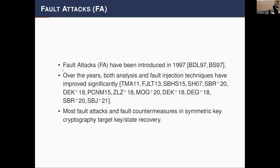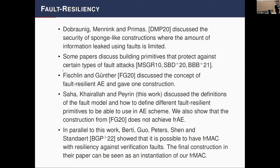Most fault attacks target key recovery or state recovery, with few targeting integrity directly, and countermeasures also target state recovery. Recently there was a paper on sponge-like constructions where the amount of information leaked using faults is bounded in the security proof. Then there was a paper by Fischlin and Günther at CCS 2020 discussing fault-resilient authenticated encryption.